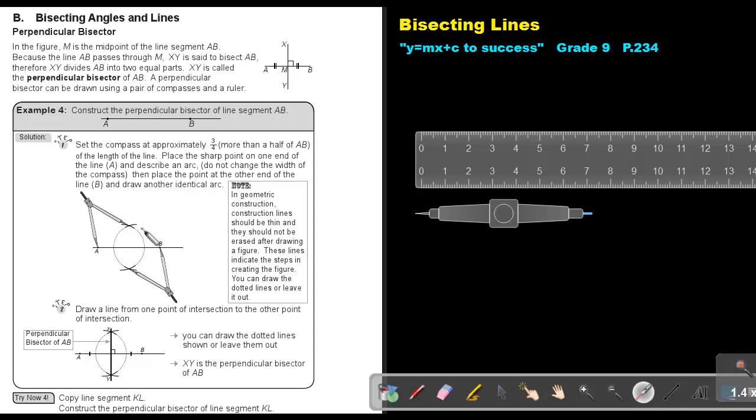First you put it there and draw that arc, then you put it there and draw that arc. Note, in geometrical construction, construction lines should be thin and they should not be erased after drawing a figure. These lines indicate the steps in creating the figure. You can draw the dotted lines or leave them out. It's actually only necessary to draw that line. You do not have to draw the whole arc.